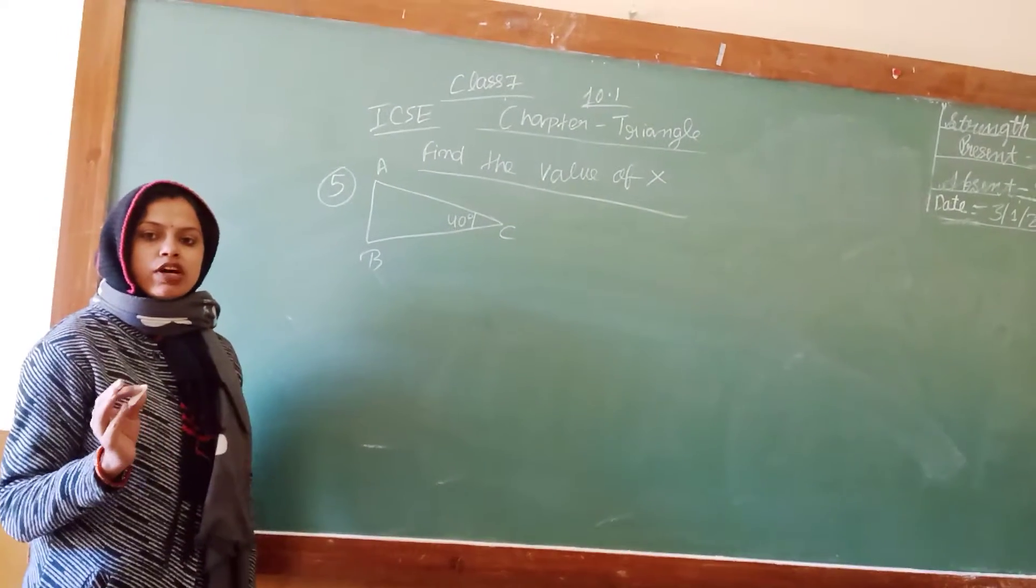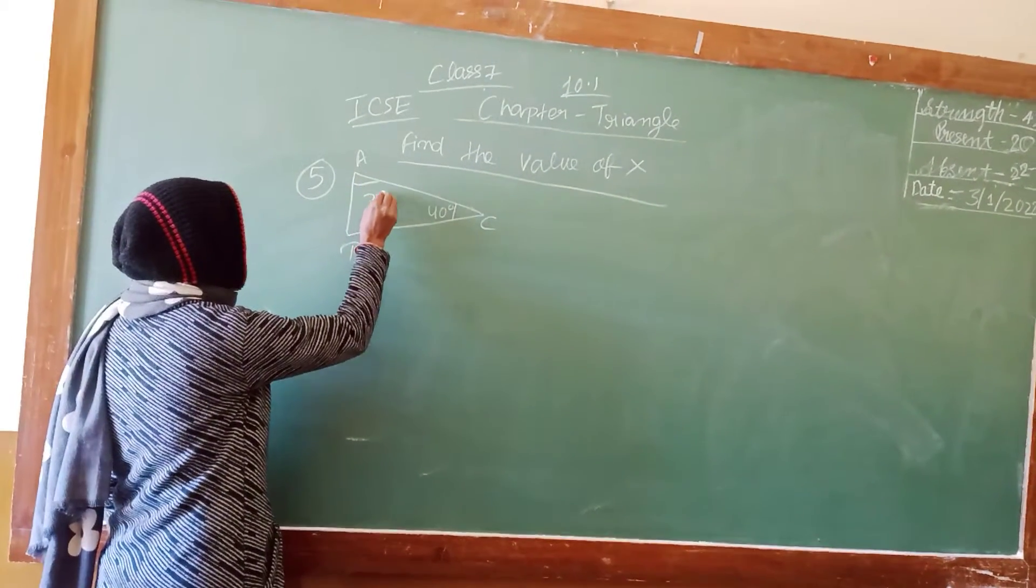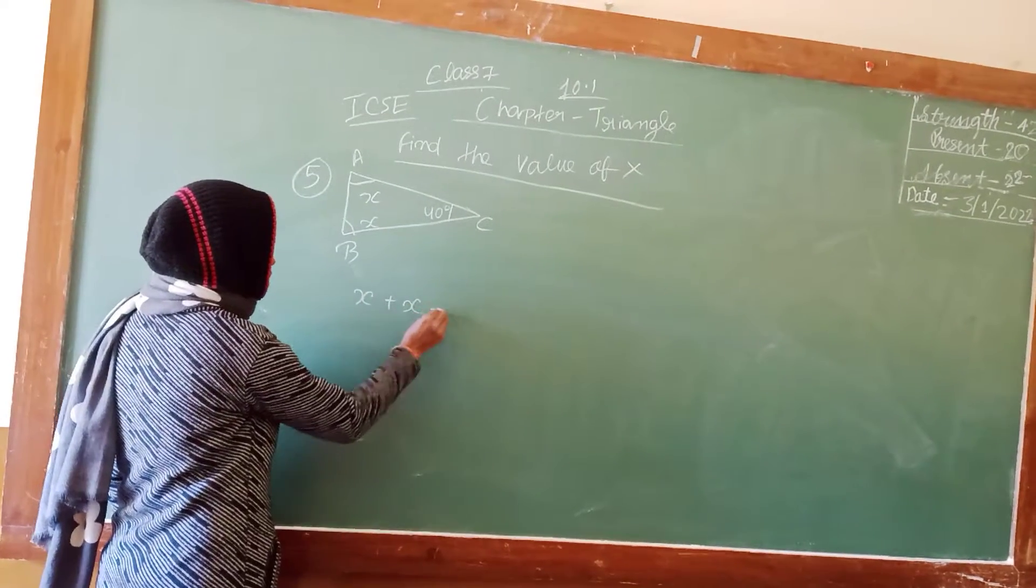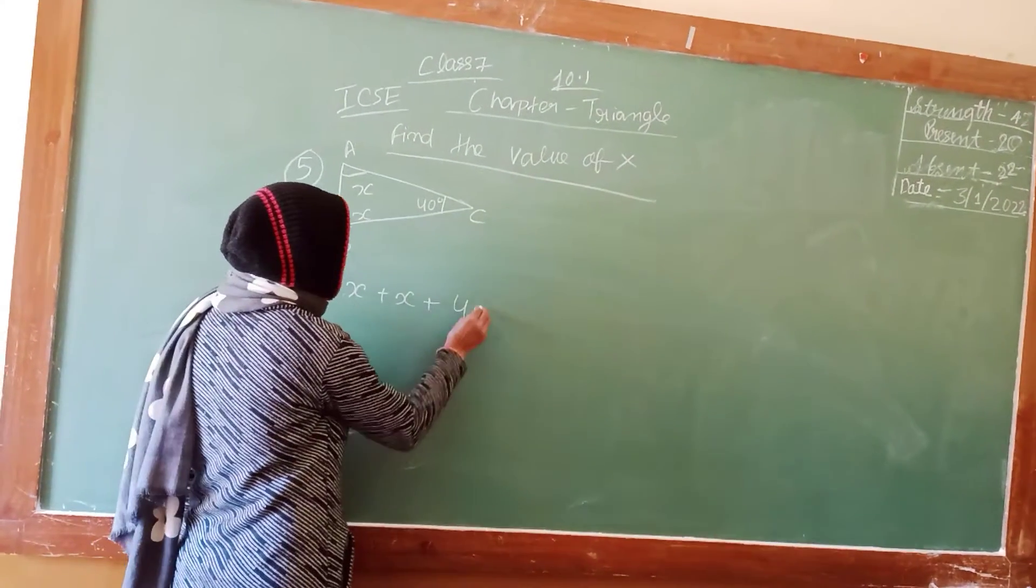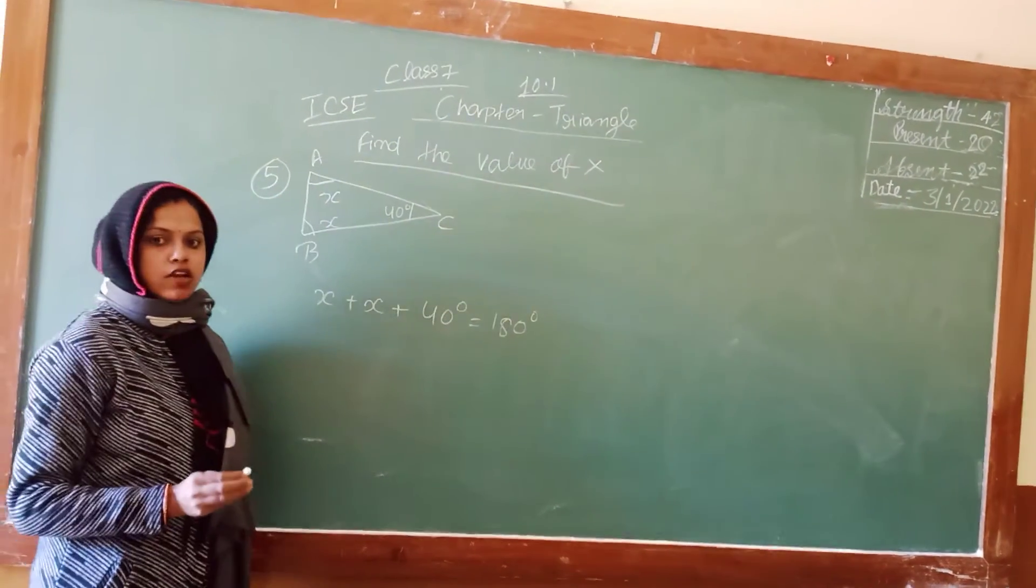So here we have to find the value of x. X plus x... we have the concept that addition of three angles should be 180 degrees. That is the property of a triangle.